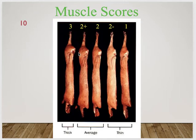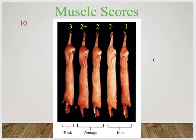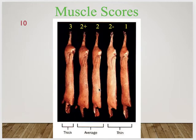As we go down the scale, we can see the ham getting progressively smaller and less plump. A score-three carcass is like a bodybuilder, while a score-one carcass is more like a lean runner — very little muscle mass. You can also see the difference in loin eye: the heavily muscled carcass has a big, prominent loin eye with good turn, while the lighter ones are much flatter — that turn of the loin is a key indicator of heavy versus light muscling.